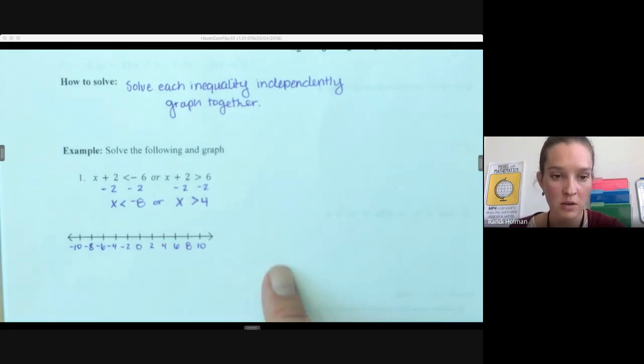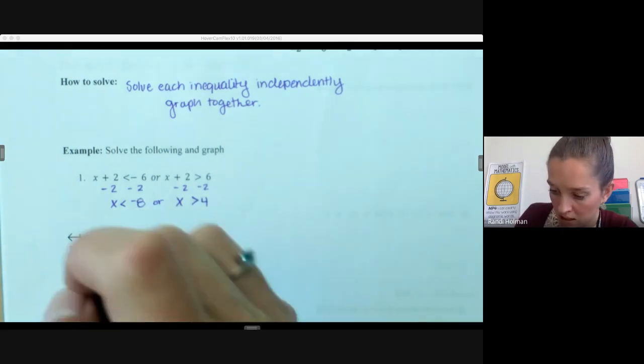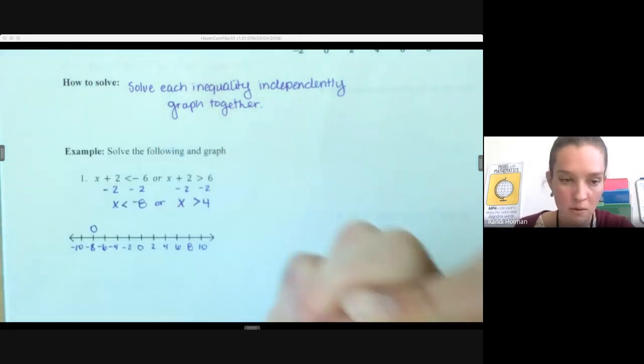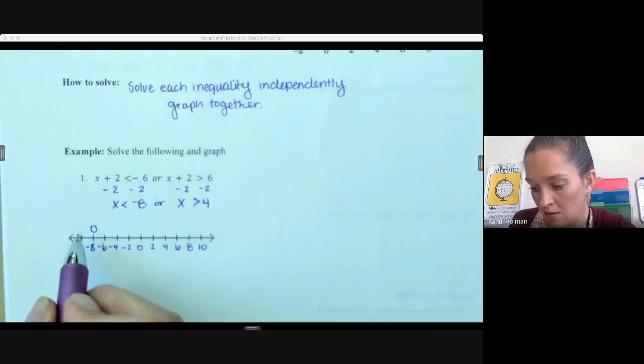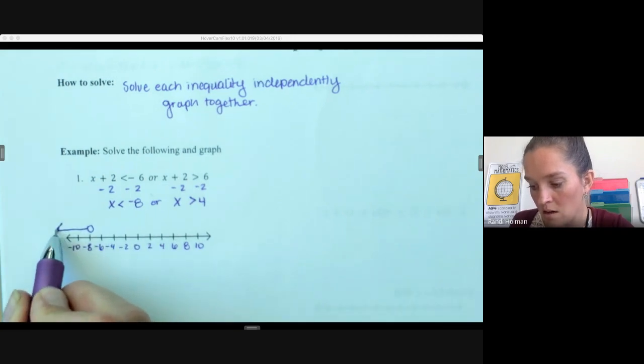So think for a minute about how you're going to set up your number line here to make sure that you include the values there. So we are x is less than negative 8. Doesn't get to negative 8, we're going to use that open circle still. We don't want negative 8 to look like a solution. And then our x values are variables smaller than negative 8, so smaller values are left on the number line.